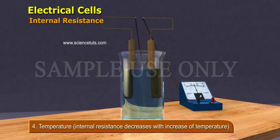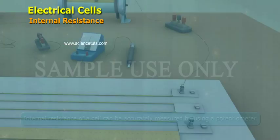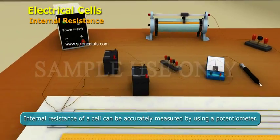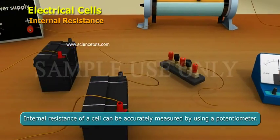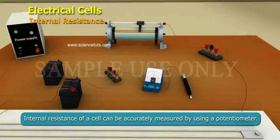Internal resistance decreases with increase of temperature. Internal resistance of a cell can be accurately measured by using a potentiometer.